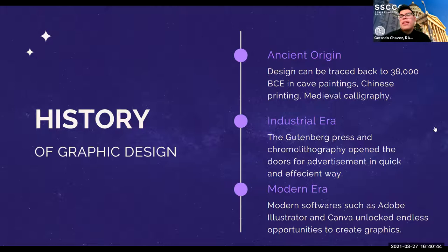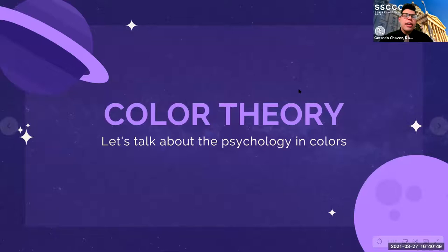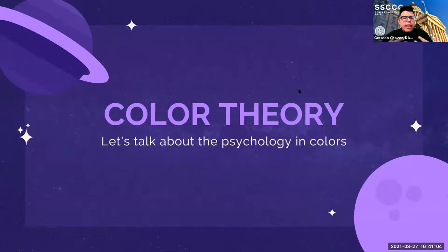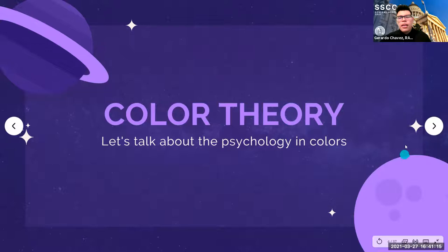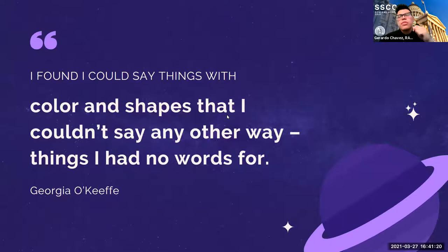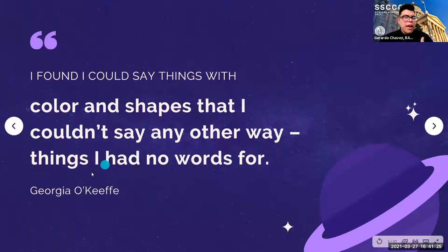Before we touch base on graphic design, it is important to talk about color. Color has its own theory. Color has its own psychology. Whenever you see a color, your brain creates a chemical reaction that delivers an emotion, or maybe it even gives you a memory from the past or an experience that you have. We're going to be talking about color, and I want to start with this quote that is really the foundation of what we're talking about. It's by Georgia O'Keeffe: 'I found I could say things with color and shapes that I couldn't say any other way — things I have no words for.'